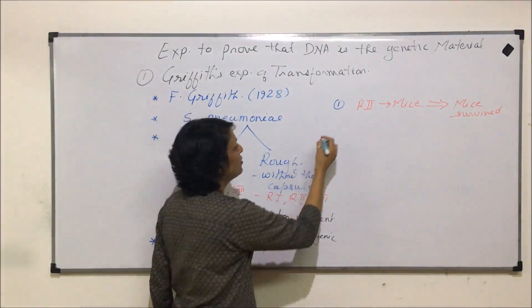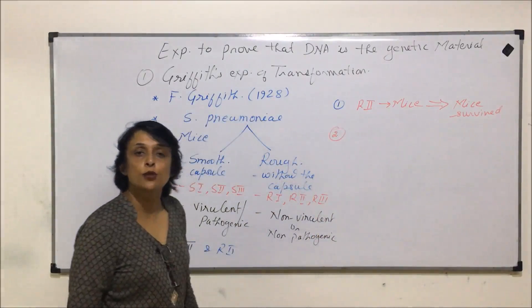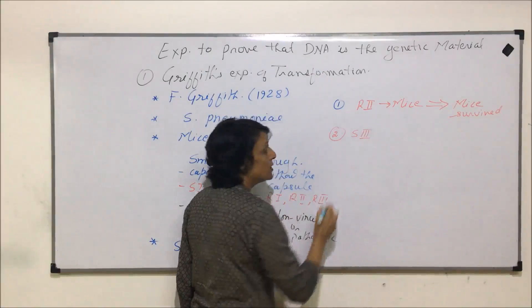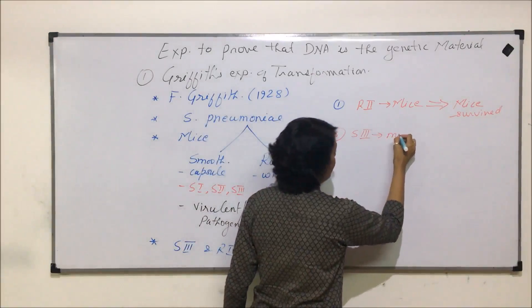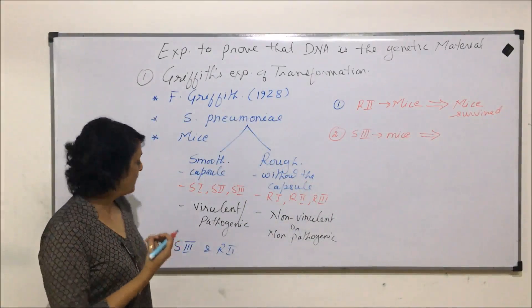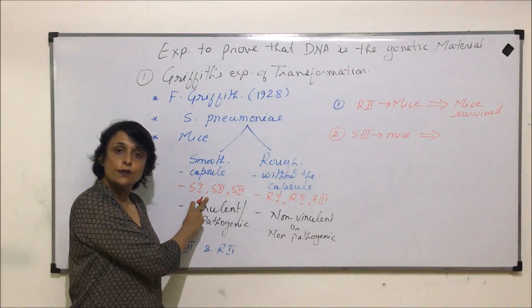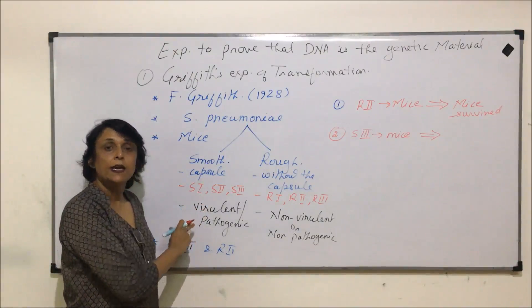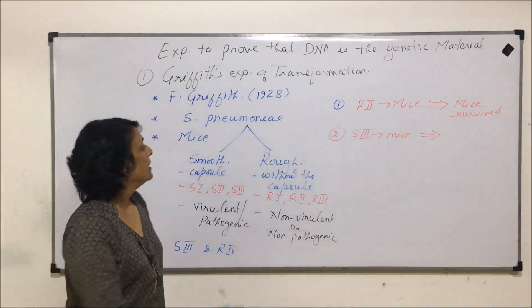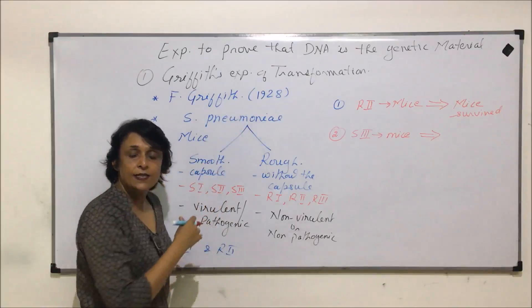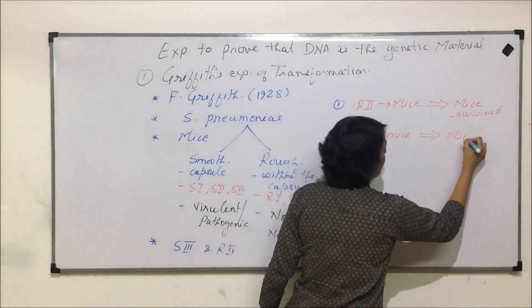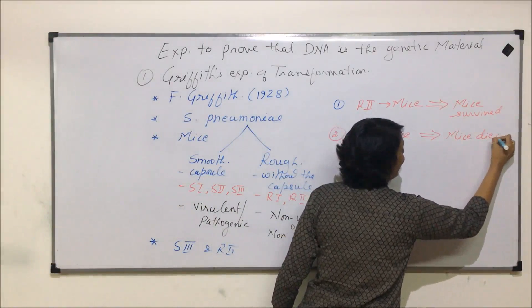In experiment two, the S3 strain was injected into the mice. This is a virulent, pathogenic strain. So after injecting this, the mice were expected to get the disease — pneumonia — and die. Again, as per expectation, the mice died.